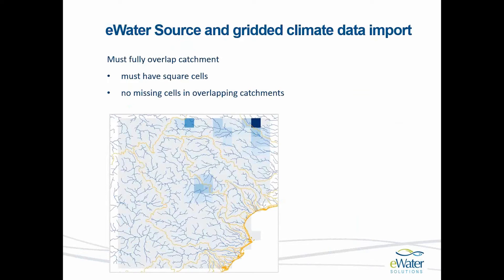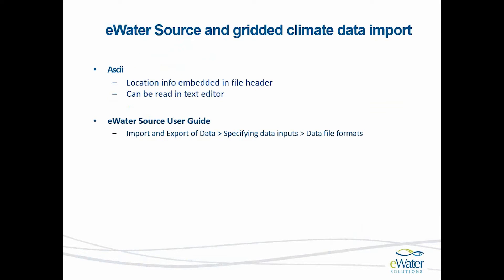This slide shows an example of grids overlapping a catchment area, showing square cells and confirming that there must be no missing cells in the overlapping catchments. Regarding the ASCII data format: location information is embedded in a file header. ASCII files can be opened and read in a text editor, so you can manually check any data you're unsure of and verify that your file header has the correct information. The eWater Source User Guide has more information in the chapter on Import and Export of Data, Specifying Data Inputs and Data File Formats.